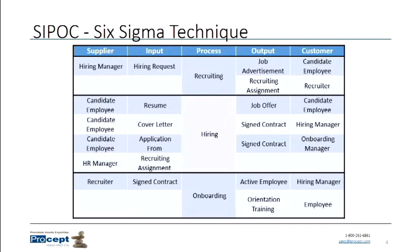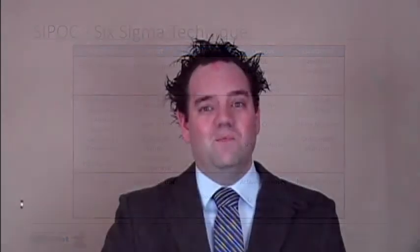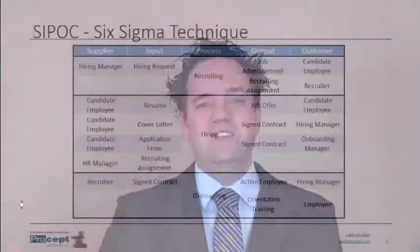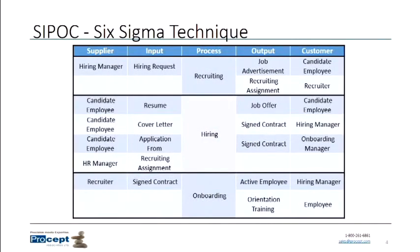Next is the process itself — what are the actual steps? What do we actually do in this process in order to produce the outputs? What do we produce? Are there documents, transactions, finished goods, work-in-progress assemblies? What do we produce at the output of this process? And then who are the customers of our process? What people, parties, organizations, or companies are making use of those outputs?